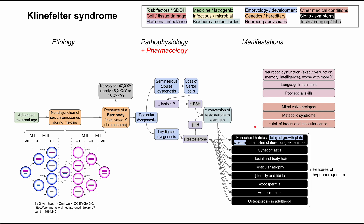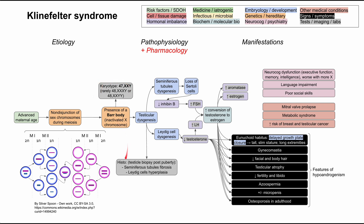How do you diagnose Klinefelter syndrome? A lot of what we already talked about — the hormonal imbalances and clinical symptoms — may allow a clinical diagnosis initially. You can confirm with further hormonal workup: patients will have high aromatase and high estrogen due to increased conversion of testosterone to estrogen. You'll also do karyotyping to confirm. For another confirmatory test, you can do histology — a testicular biopsy, usually done post-puberty — where you'll see fibrosis in the seminiferous tubules and Leydig cell hyperplasia.